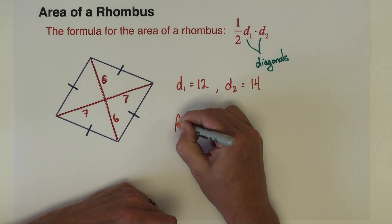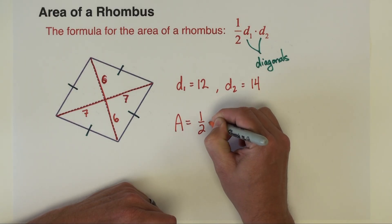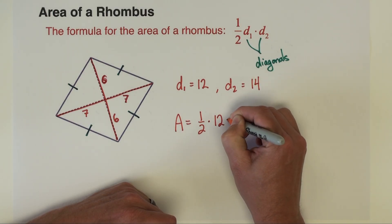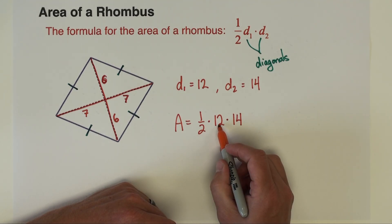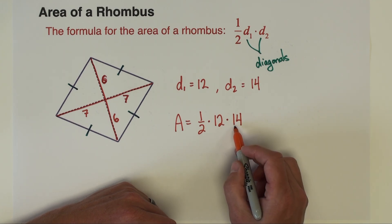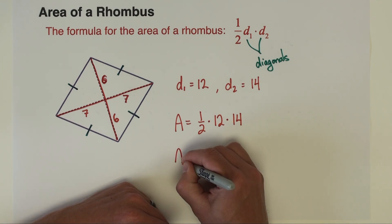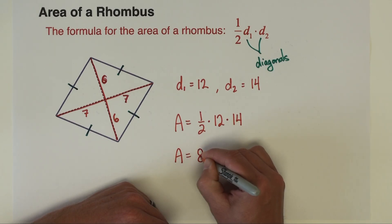And so our area is going to be one half times 12 times 14. So you can do half times 12 and get six. And then you can do six times 14. And our area is going to be 84.